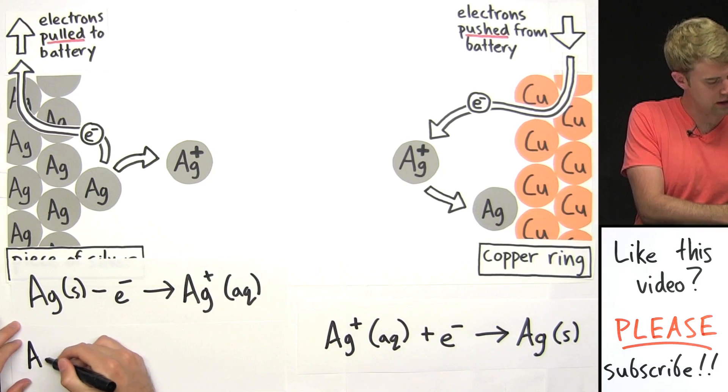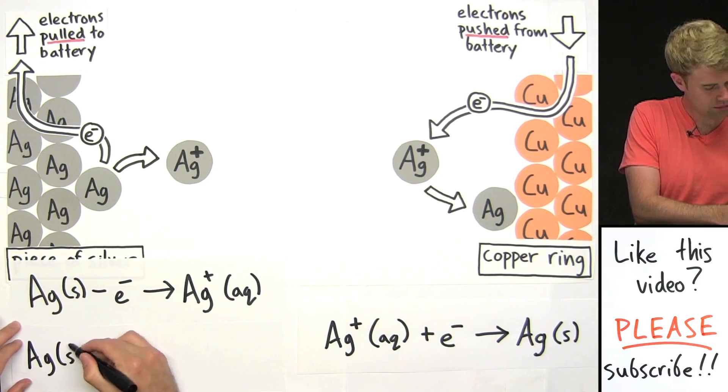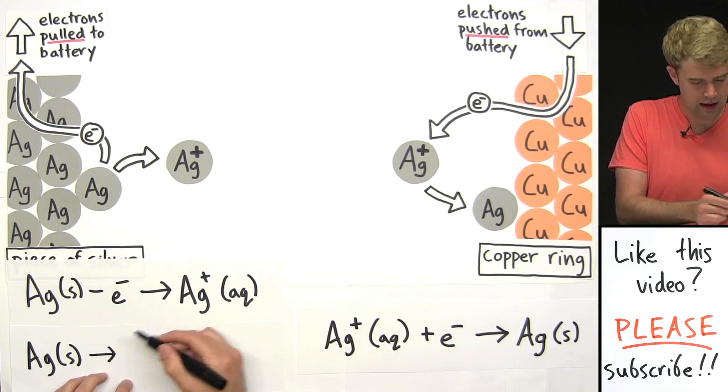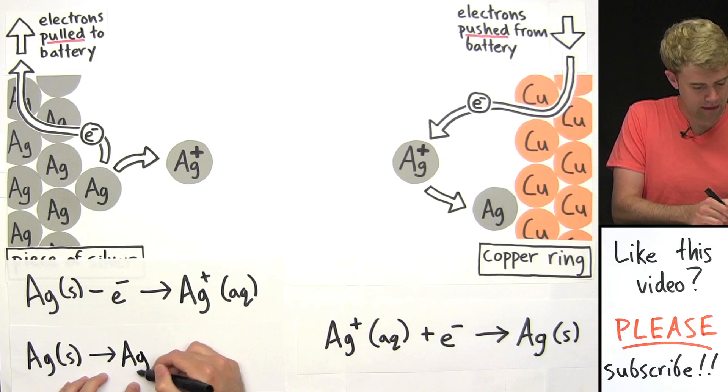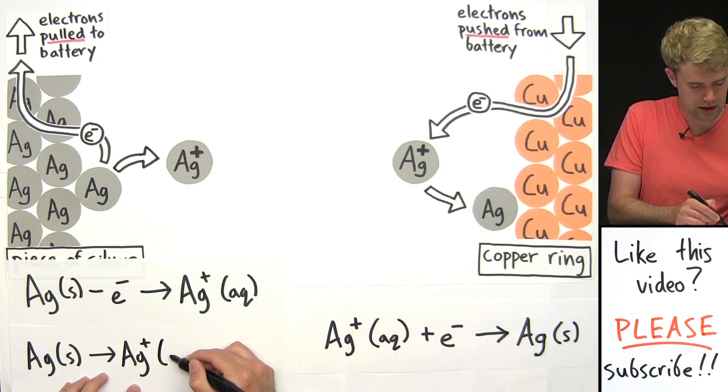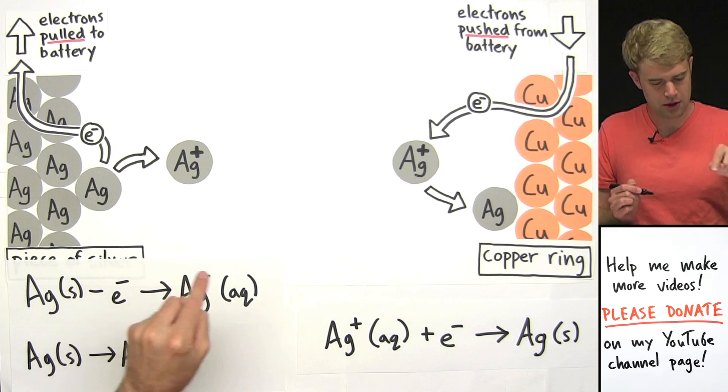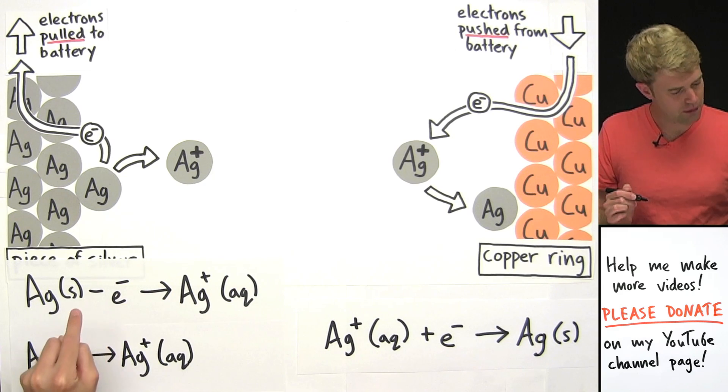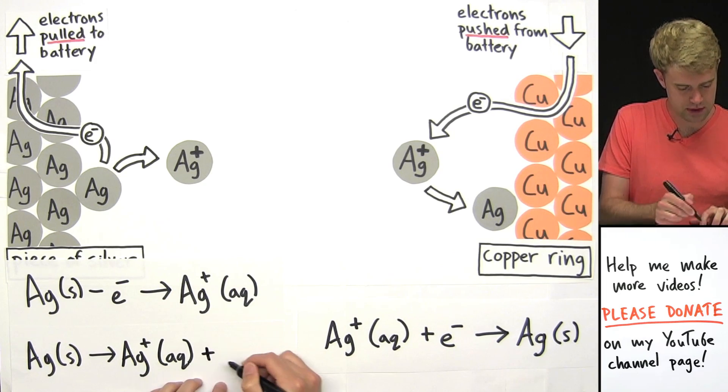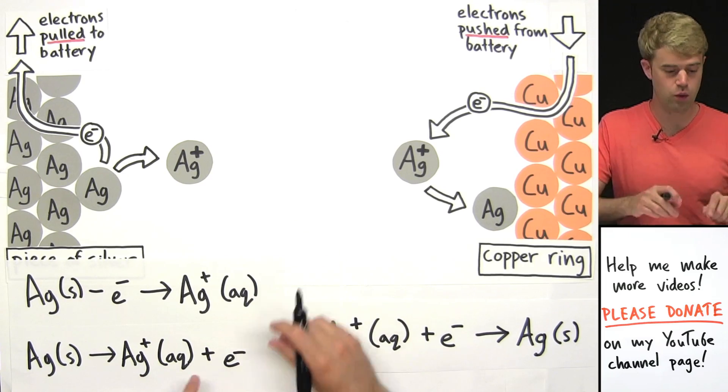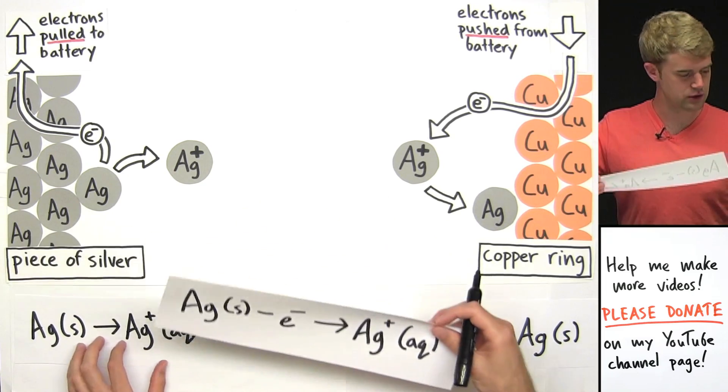Let me show you what I mean by rewriting this. So we've got Ag solid, and then I'm going to be moving this electron over here, so I'm just going to put my arrow. Now I have Ag1+, that's aqueous, and now that the electron is going to be on this side, I change its sign from minus to plus, plus E minus. This is the correct way to write the equation for this process.